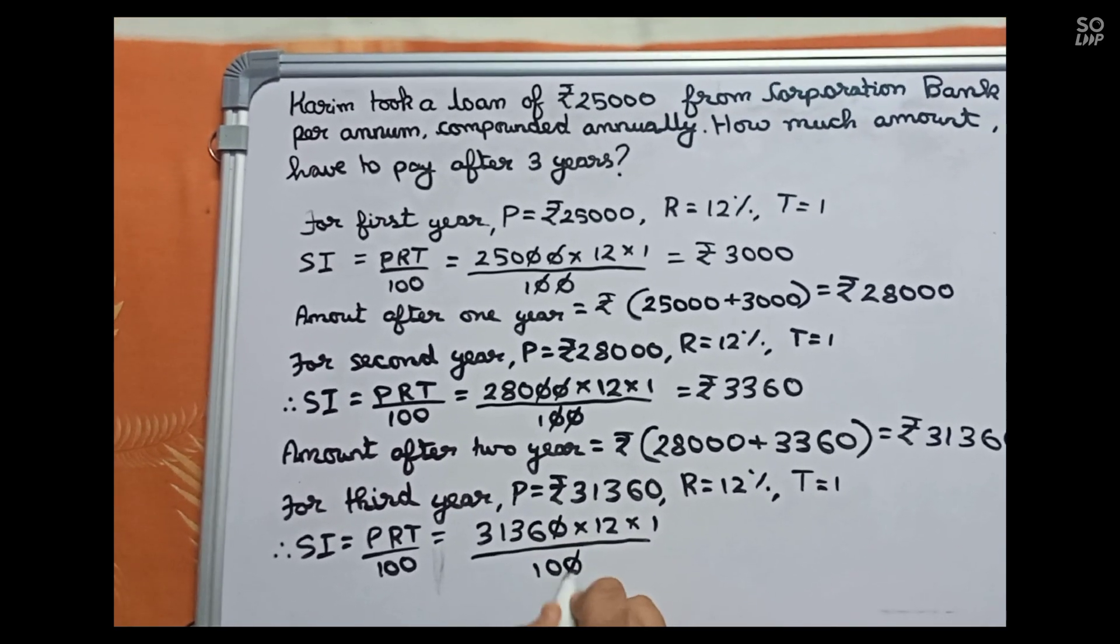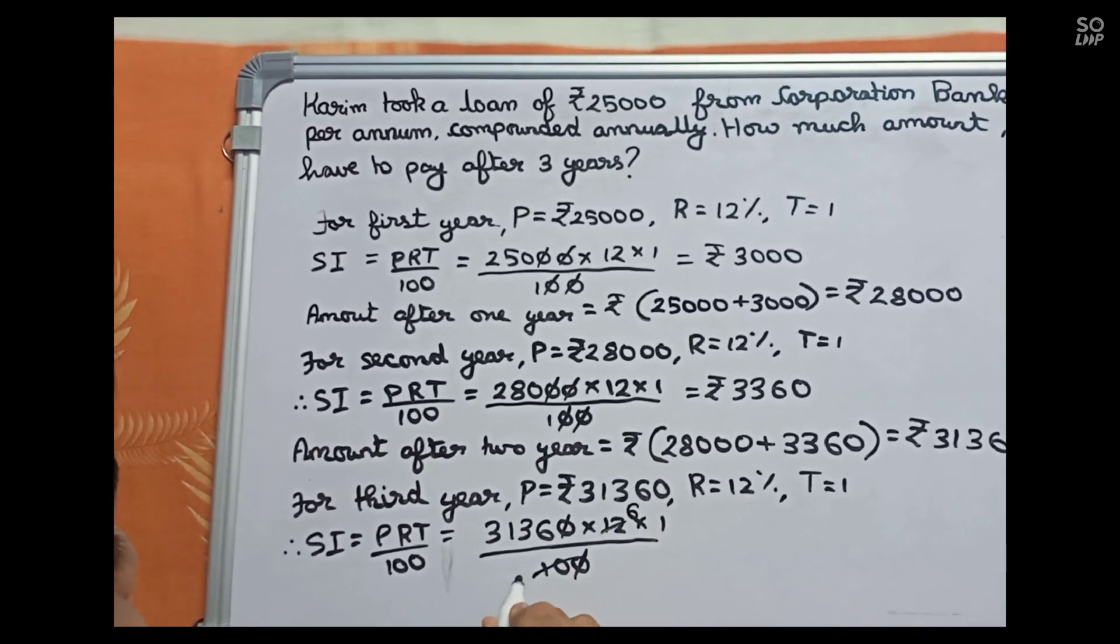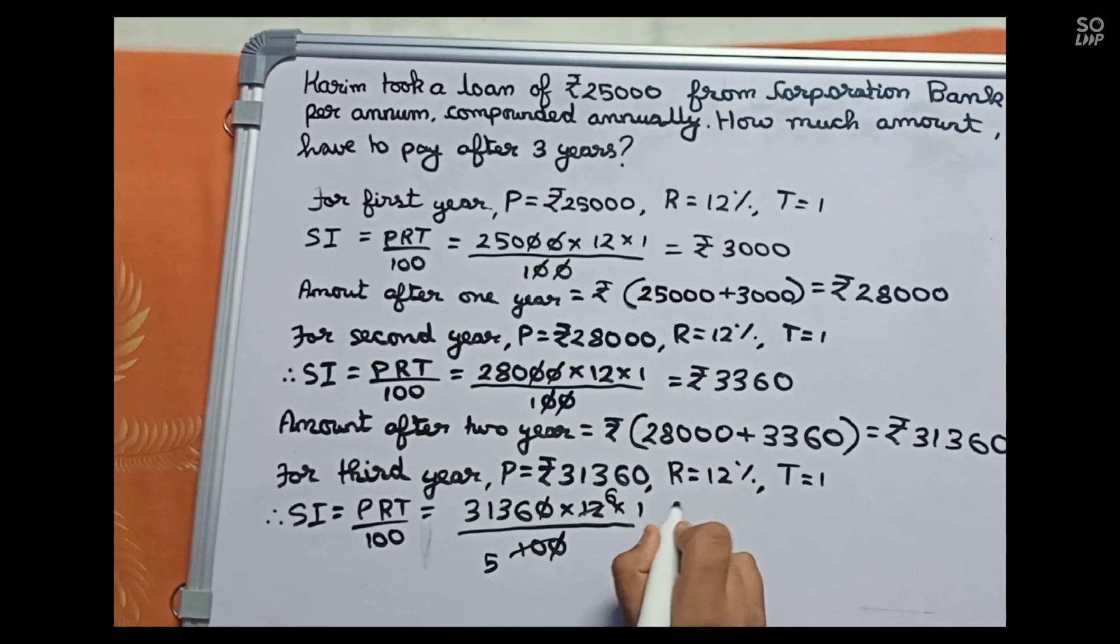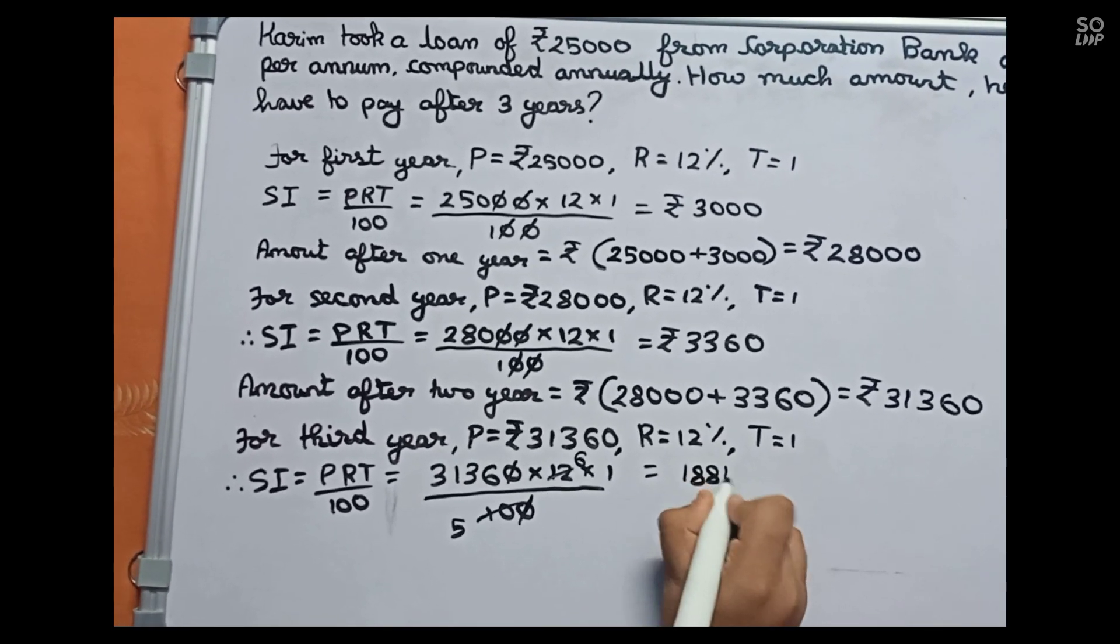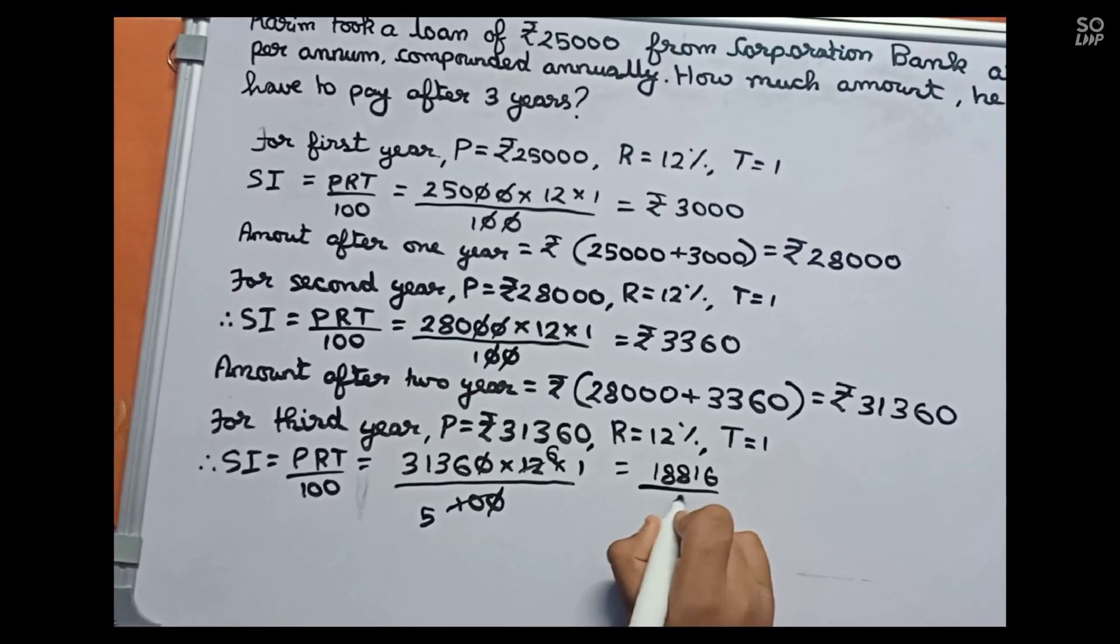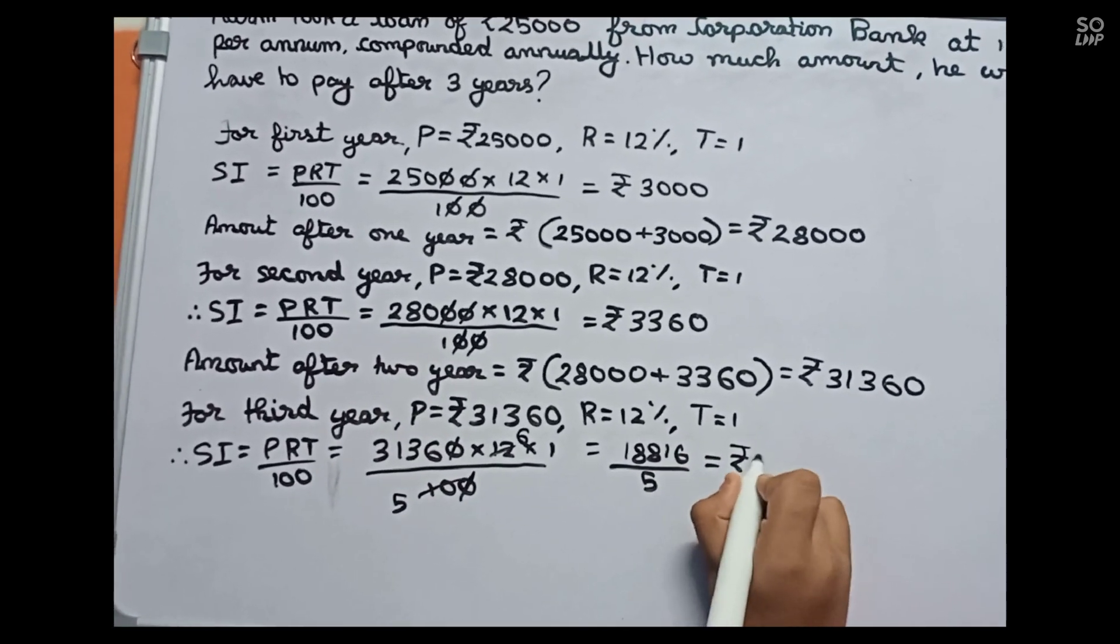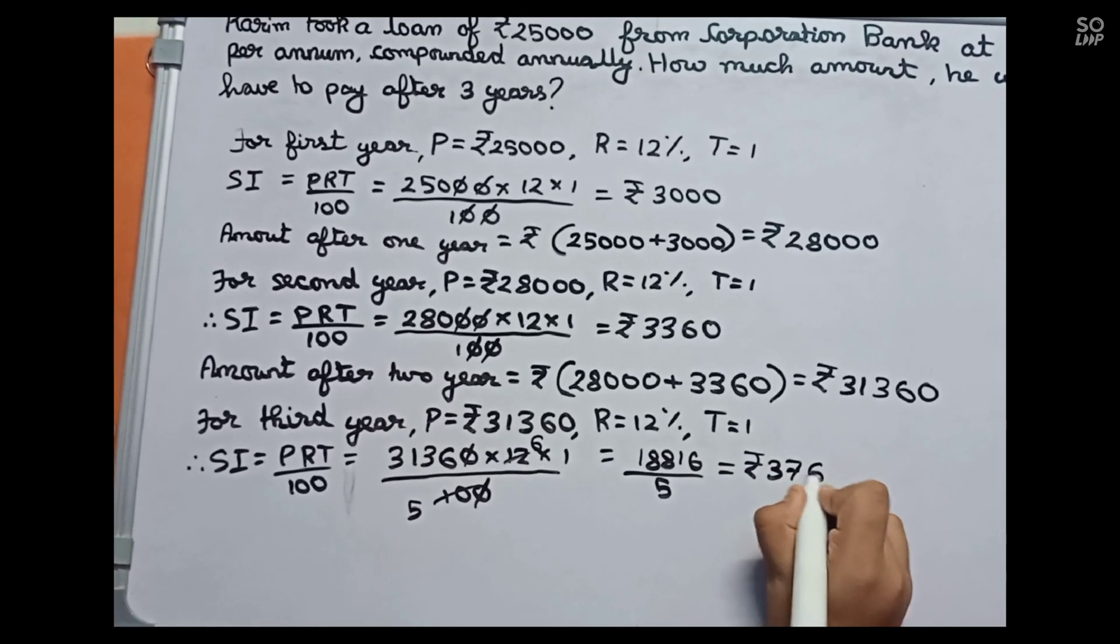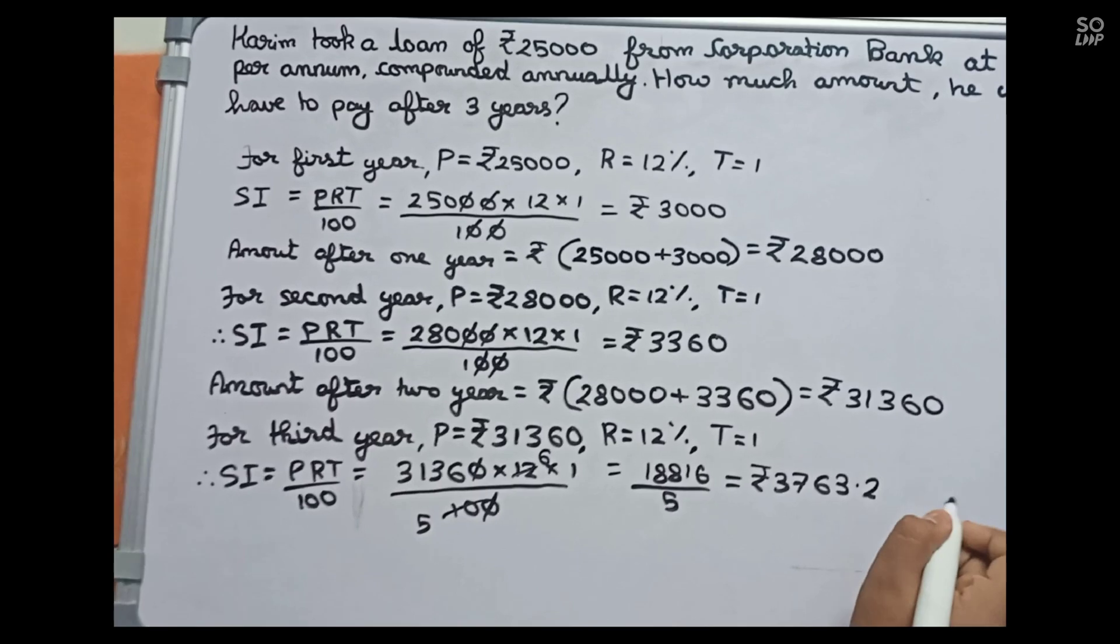We will cut the zeros. I will cut 12 by 10 by 2, it will become 6 by 5. So after multiplying 31,360 into 6, it will become 18,816. Now I will divide it by 5, so the SI will become 3,763.20.